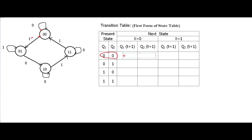When x equals 0, the next state is 00. When x equals 1, the next state is 01. This tells us: when x equals 0 the next state is 00, and when x equals 1 the next state is 01. Similarly, we move to the next present state 01.